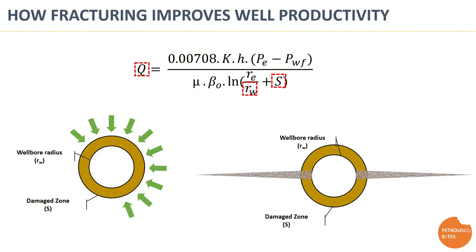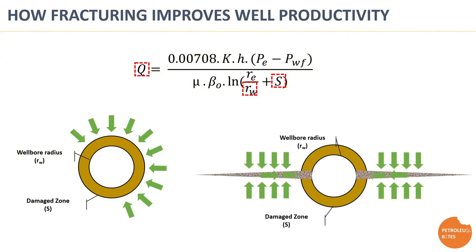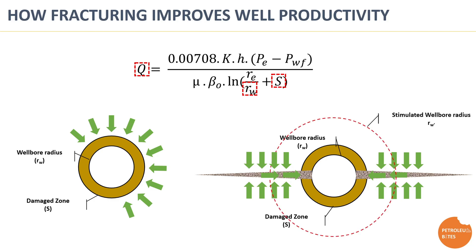Hydraulic fracturing creates a highly conductive path that bypasses the near-wellbore damage zone and maximizes contact area with the reservoir, allowing more fluid production from the reservoir with less resistance to fluid flow. It's almost similar to drilling and completing a well with a larger wellbore radius.